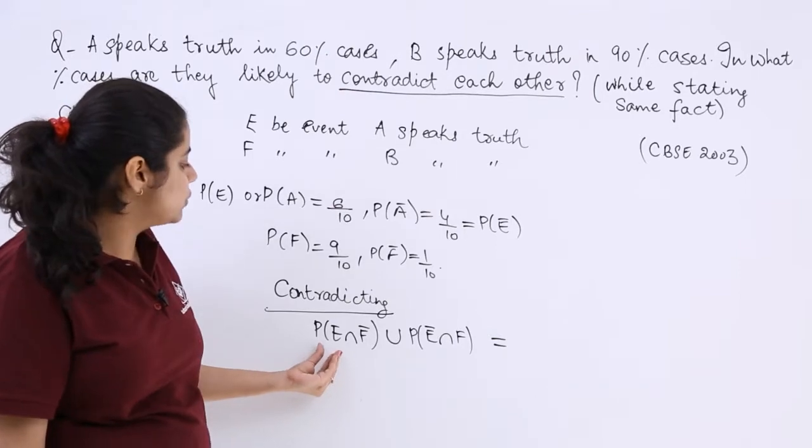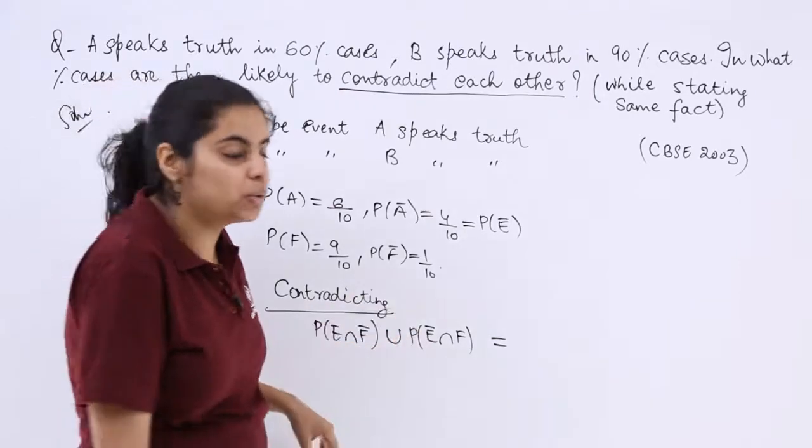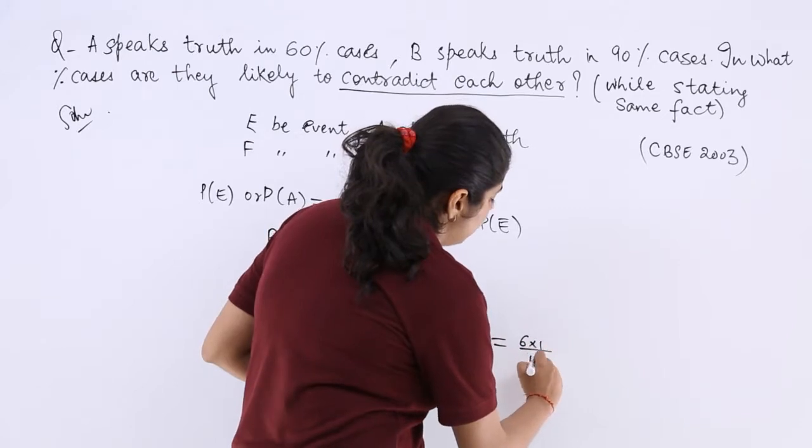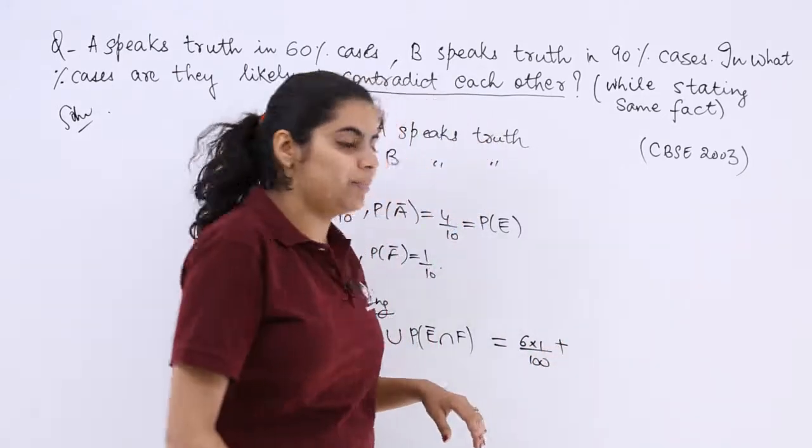So this would be probability of E which is 6 over 10 multiply by 1 over 10, so 6 into 1 over 100. Then or is again plus sign.